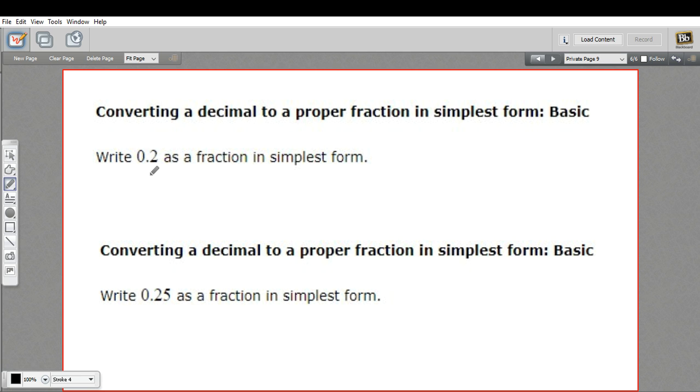The way you convert a decimal to a fraction is you find the place of the last number going this way. After the decimal point, the first place is tenths, and that's all we've got here. So our denominator is tenths. And then the number is what goes on top. So this is two tenths. Point two is two tenths.